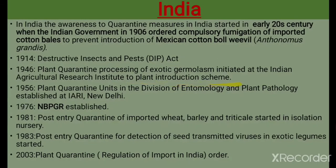In 1956, plant quarantine units in the Division of Entomology and Plant Pathology were established at the Indian Agricultural Research Institute in New Delhi. In 1976, the NBPGR — the National Bureau of Plant Genetic Resources — was established. In 1981, post-entry quarantine of important wheat, barley, and triticale started in isolation nurseries. In 1983, post-entry quarantine for detection of seed-transmitted viruses in exotic legumes started. In 2003, the Plant Quarantine Regulation of Import into India Order came into existence.